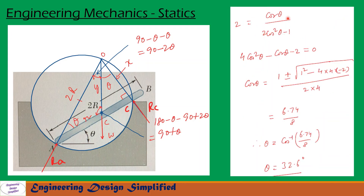After rearranging, we get the quadratic equation 4 cos²θ − cos θ − 2 = 0. The roots give cos θ = (1 ± √(1 + 32)) / 8. Solving this, we get θ = 32.6 degrees.